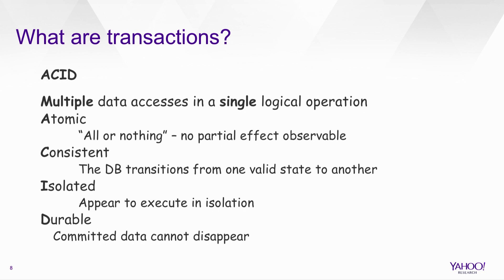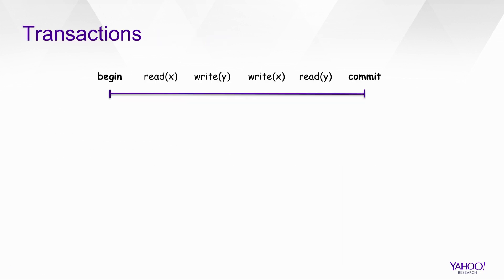Let's talk about what transactions are. ACID transactions were defined by Jim Gray. Basically it's multiple data accesses in a single logical operation which is atomic — everything occurs or nothing occurs. It's consistent, meaning it moves the database from one consistent state to another. It's isolated — everything appears in isolation; when you're doing your writes, no one sees it until you finish. And it's durable — once committed, it cannot disappear. From a user's perspective, a transaction has a begin and ends with a commit, with reads and writes in between. Until you successfully commit, no one will see what you write.